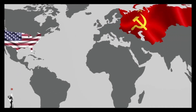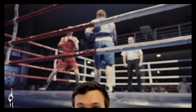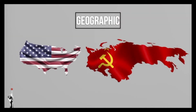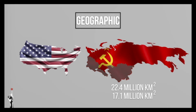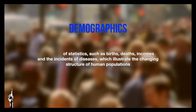So let's compare the two superpowers — America and the USSR — as if it would be a boxing match between two heavyweights. Remember, we're talking about these countries during the cold war and not their current state. Geographically, the Soviet Union was the biggest country in the world, measuring an area of 22.4 million square kilometers, of which Russia was 17.1 million kilometers, compared to America, the fourth biggest country in the world with an area of 9.8 million square kilometers. Now let's move to the demography of the two nations. Demographics is the study of statistics such as births, deaths, incomes, and the incidence of diseases, which illustrate the changing structure of human populations.